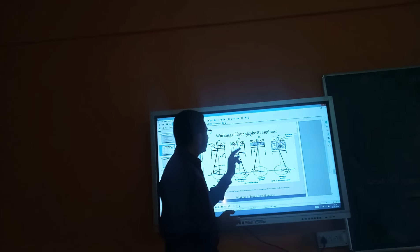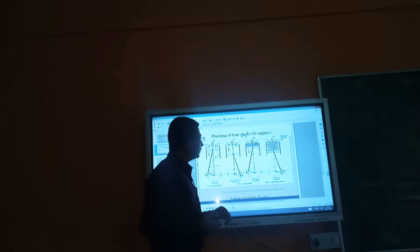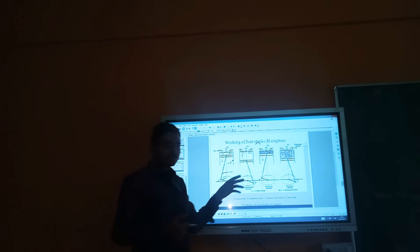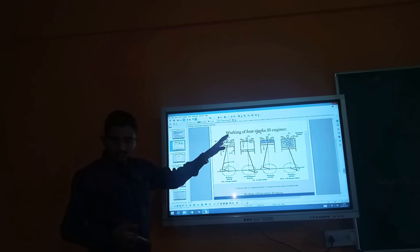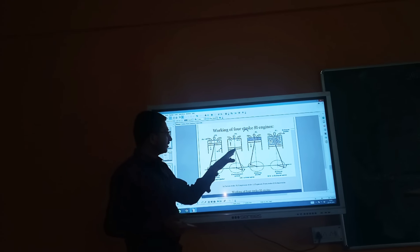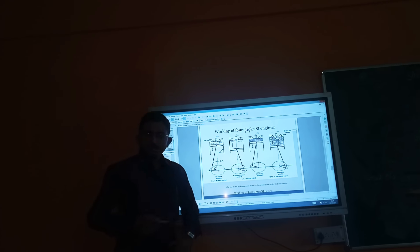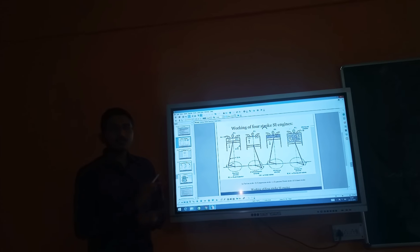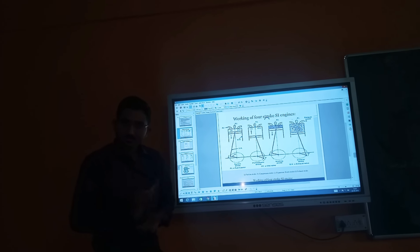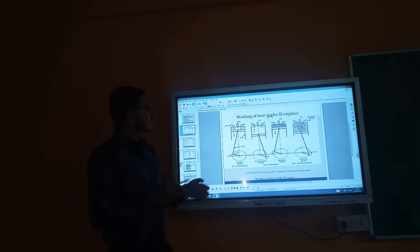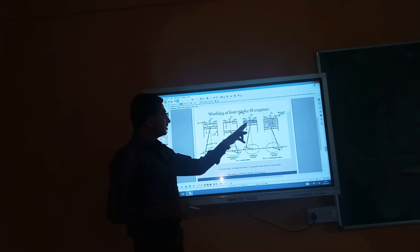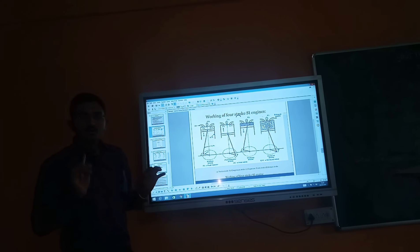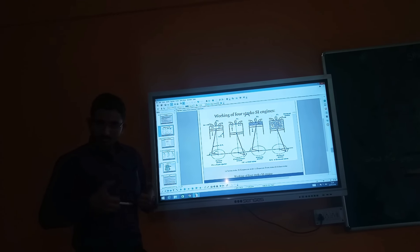In the power stroke, a spark is produced due to the combustion of the air-fuel mixture. This is also called the working stroke — the working stroke is the main part of the cycle. In this stroke, both the inlet and outlet valves are closed.